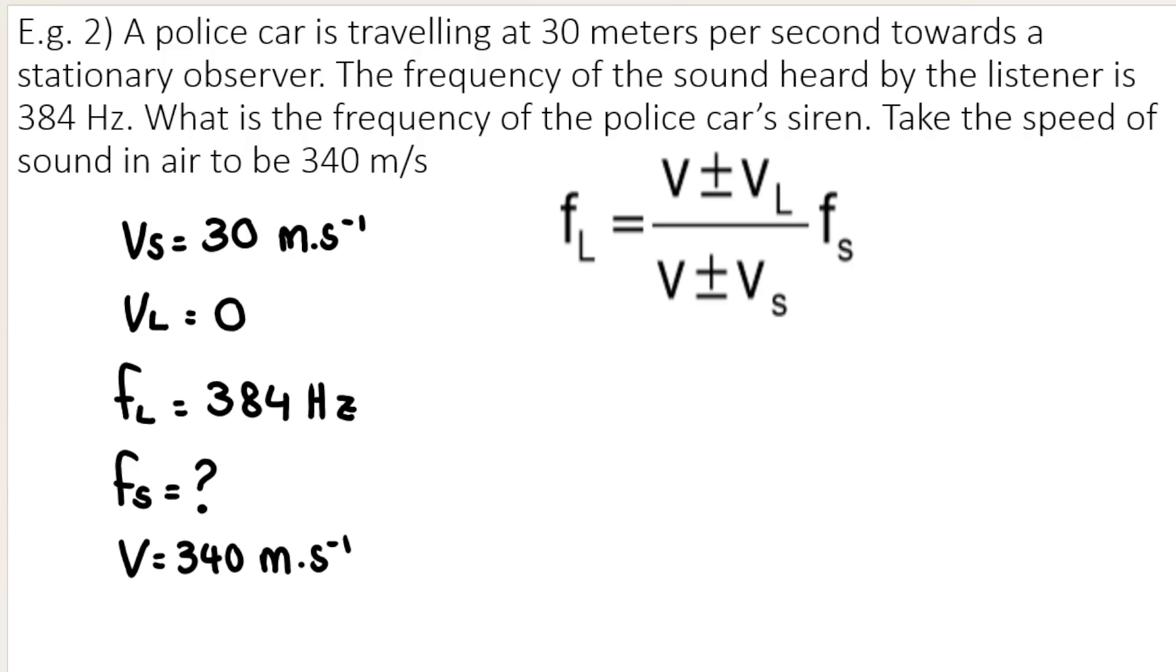Then the next thing I need to do is substitute. So, frequency of the listener, frequency observed by the listener, 384. V on the top and the bottom is 340. So we're going to put a 340 on the top, a 340 on the bottom. Now, to figure out whether to put plus or minus in the numerator and denominator, I personally am going to use my little diagram that I taught you in the first lesson. And it looks like this.